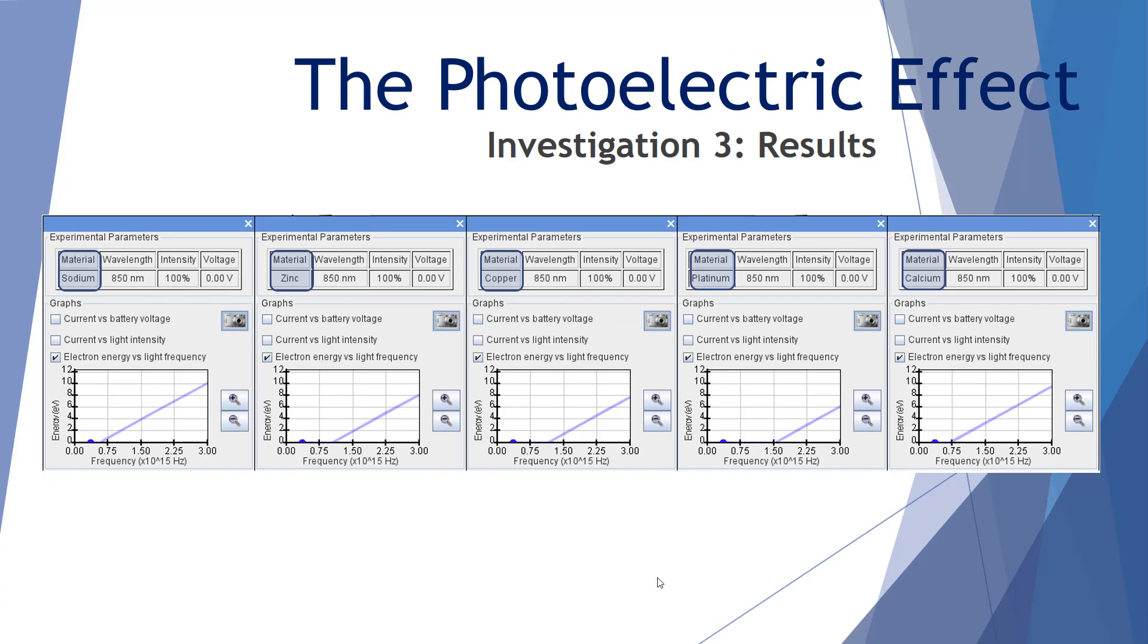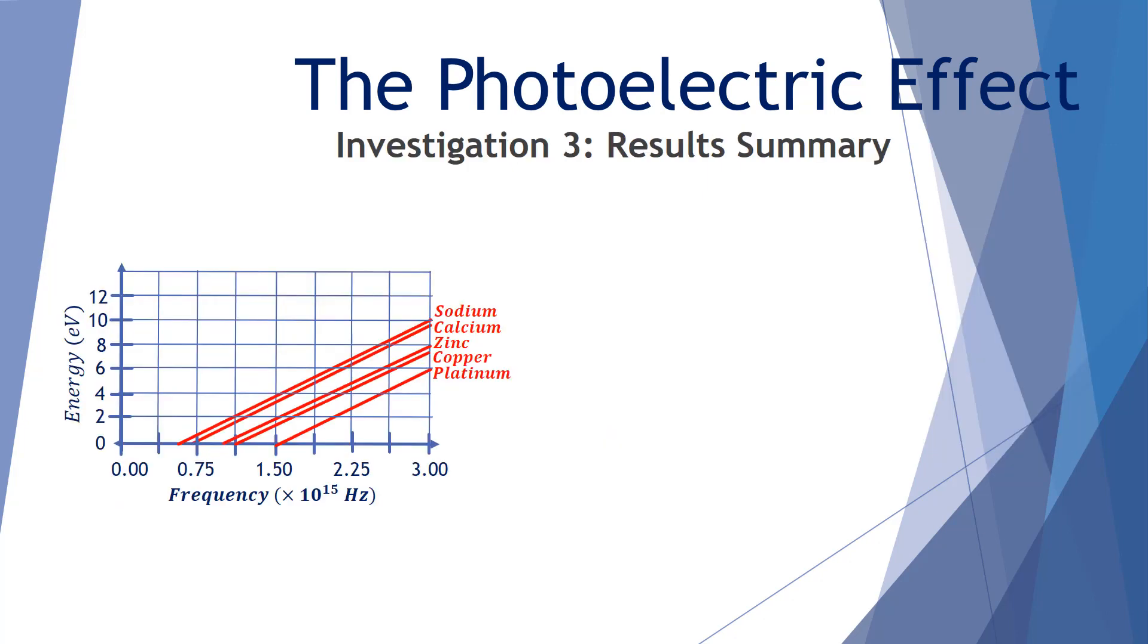Here's our results from our investigation. As you can clearly see, there's some definite similarities between each of these five graphs and obviously there are also some differences as well. Let's investigate this relationship in more detail. So here's a summary of our findings. We have the energy in electron volts on the vertical scale. We have the frequency of the incident light in hertz. And here's our one, two, three, four, five different metals we used as our cathodes.